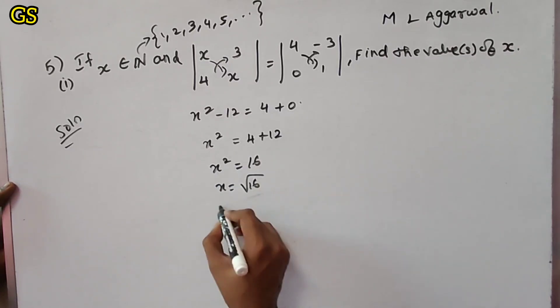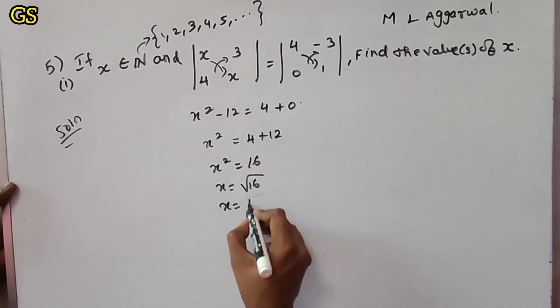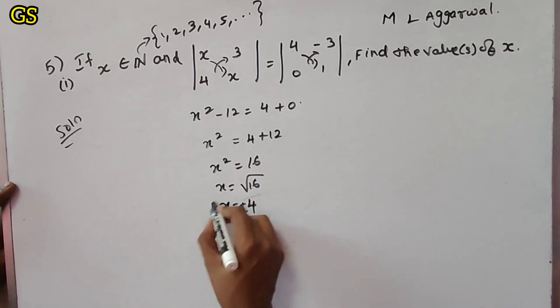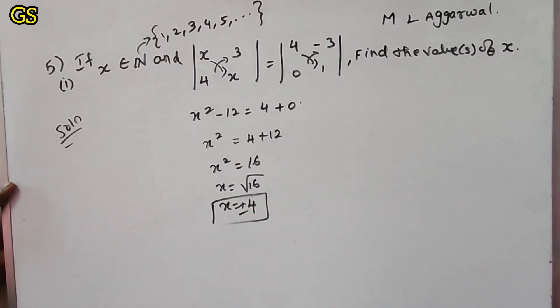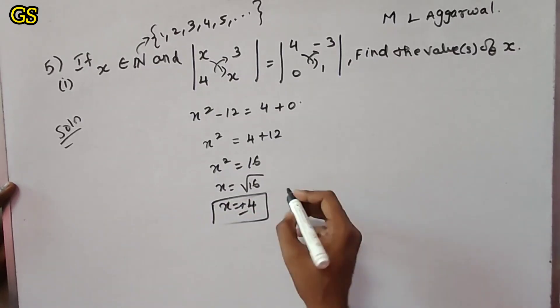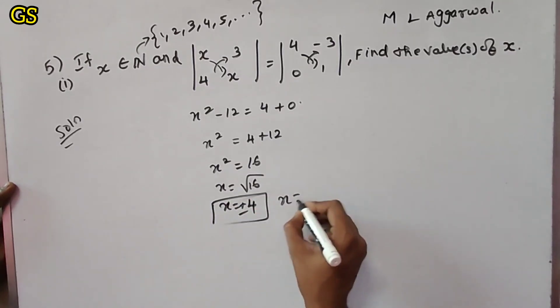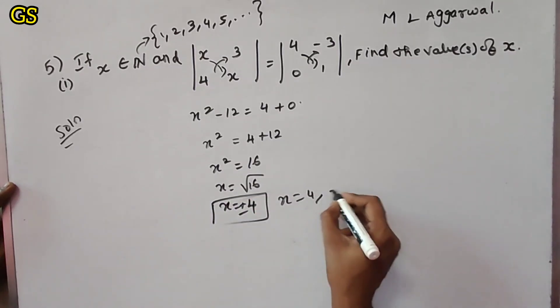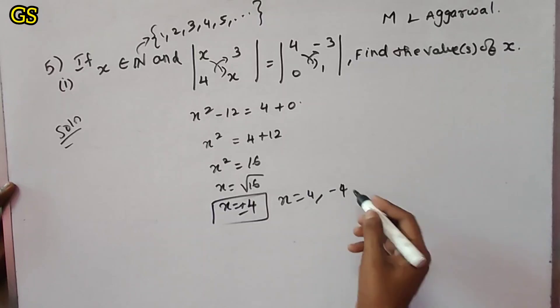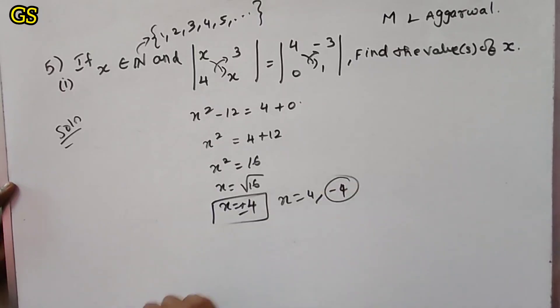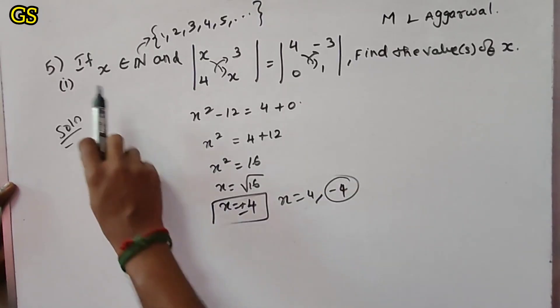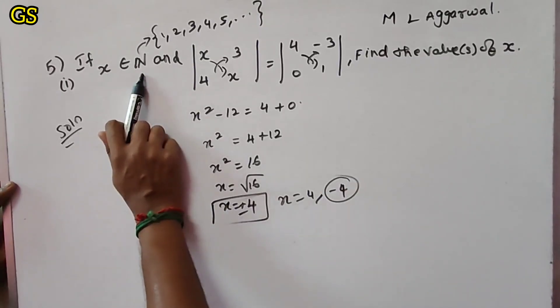The square root of 16 gives plus or minus 4. So x = ±4. But x is a natural number — natural numbers are positive — so minus 4 is not valid.